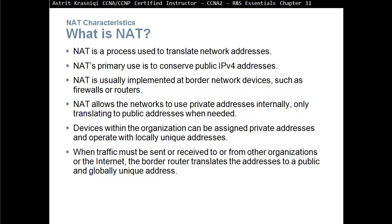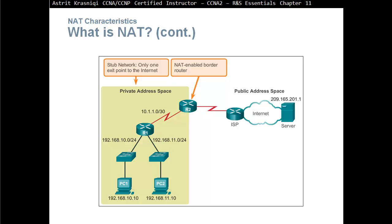Devices within the organization can be assigned private addresses and operate with locally unique addresses. If they are communicating with each other on the local network, they never need to be translated — they will communicate with that private IP address. But when they need to communicate to another organization on another network or access the internet, those private addresses need to be translated into public and globally unique addresses. For example, here we have NAT enabled on the border router. Everything in our local area network can have private addresses.